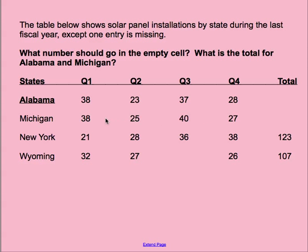Michigan has all the numbers here. New York has all the numbers all the way across. Wyoming: we have Q1, Q2, Q3 is missing, Q4 gives information, and then we have a total. So you might say to yourself, how would I go about figuring this out? I'm going to let you think for a minute and then I'll explain what you should do.